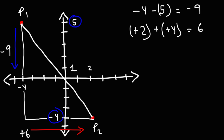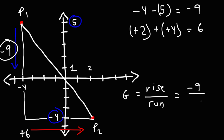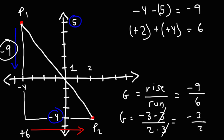So we're traveling 6 units to the right. The gradient is the rise divided by the run. The rise is negative 9 because we're going down, and the run is 6, giving us negative 9 over 6. We can reduce this fraction: negative 9 is negative 3 times 3, and 6 is 2 times 3, so the 3s cancel, giving us a gradient of negative 3 over 2.